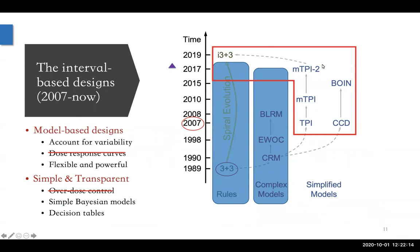Moving on, the rest of the designs try to simplify the operation, but maybe sacrifice a little bit of statistical models — at least the principle in building statistical models and inference. The reason for the sacrifice is to really make the application easy and also try to find a compromise between the ethical constraints that sometimes are against the statistical principles. Because we're treating humans, we can't do things that even modeling-based inference agrees with but imposes potential risk on patients.